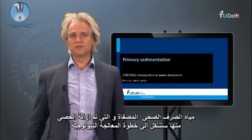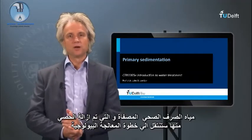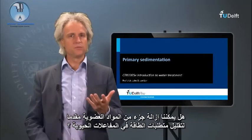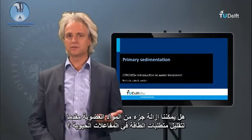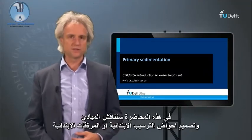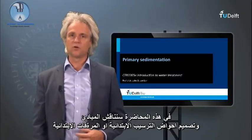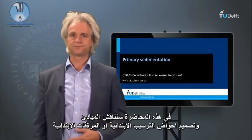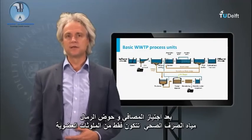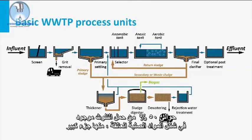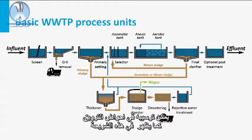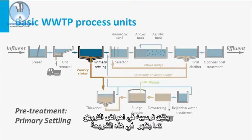The screened and de-gritted sewage is further conveyed towards the biological treatment step. Can we remove some part of the organic matter upfront to minimize energy requirements in the bioreactors? In this lecture we will discuss the principles and design of the primary settlers or primary clarifiers. After passing the screens and grit chamber, the sewage merely consists of organic pollutants. About 50% of the pollution load is present as suspended solids, of which a large part is settleable in a clarification tank as indicated in this slide.